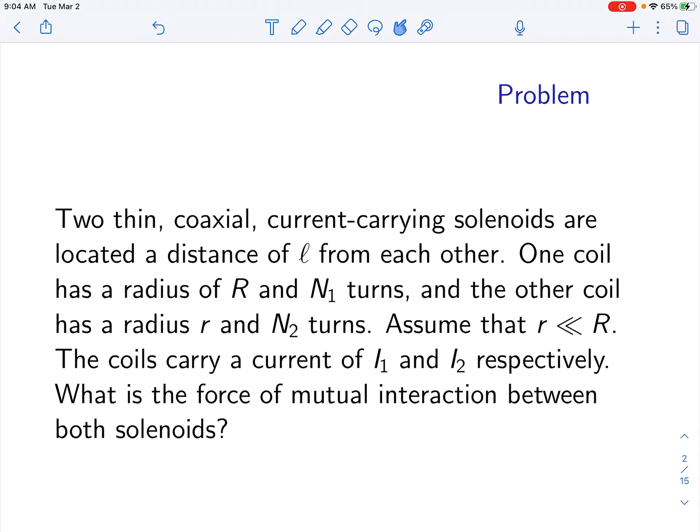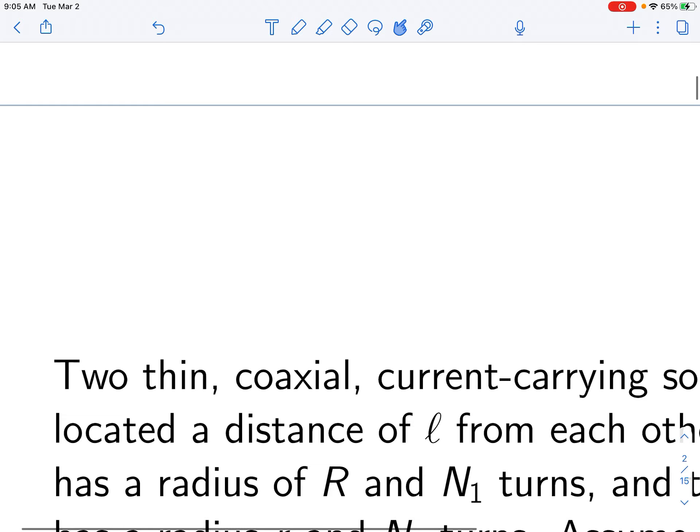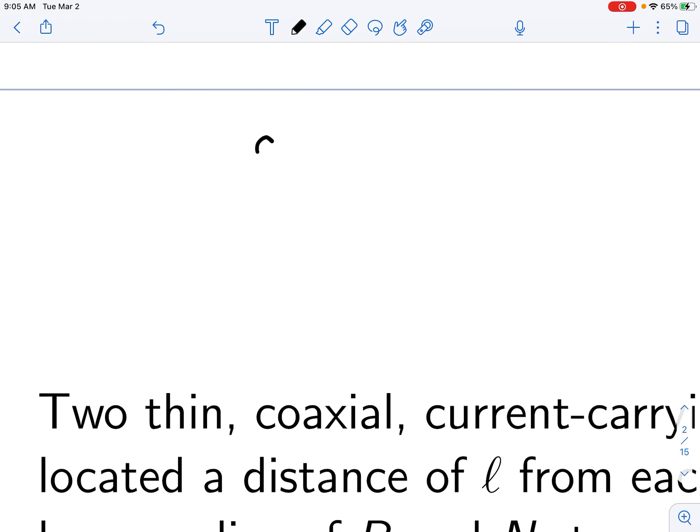Two thin coaxial current carrying solenoids are located at a distance L from each other. One coil has a radius of R and N1 turns, and the other coil has a radius of little r and N2 turns, and assume that little r is much less than big R.